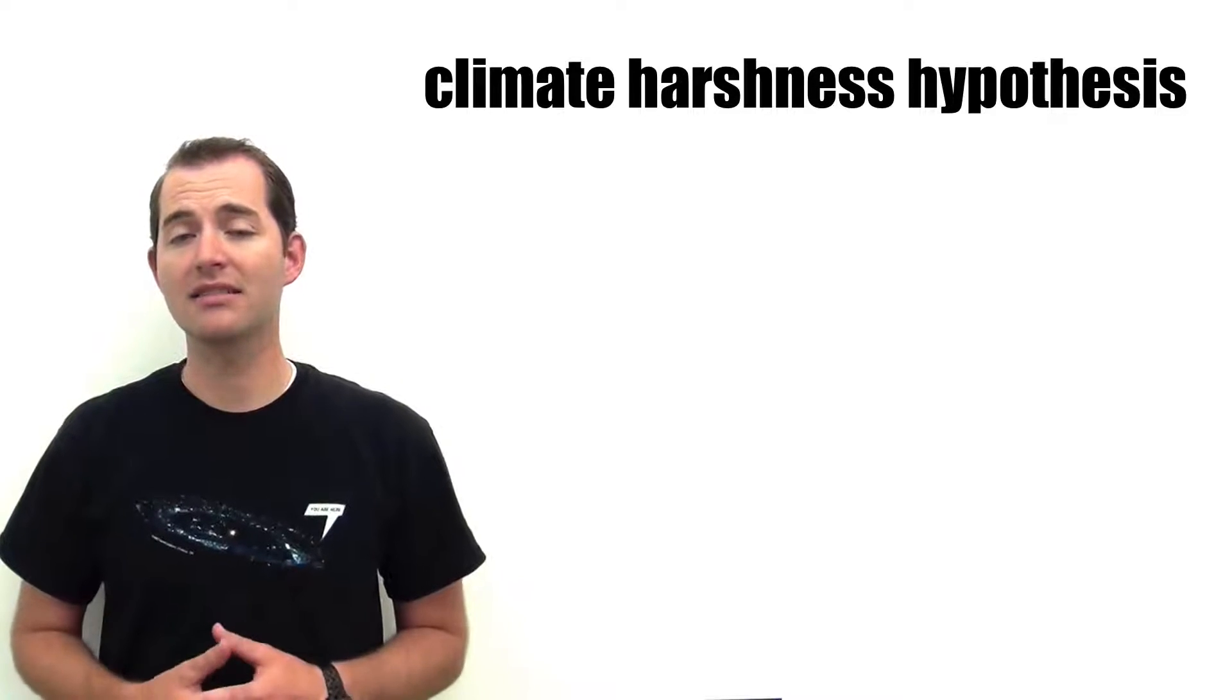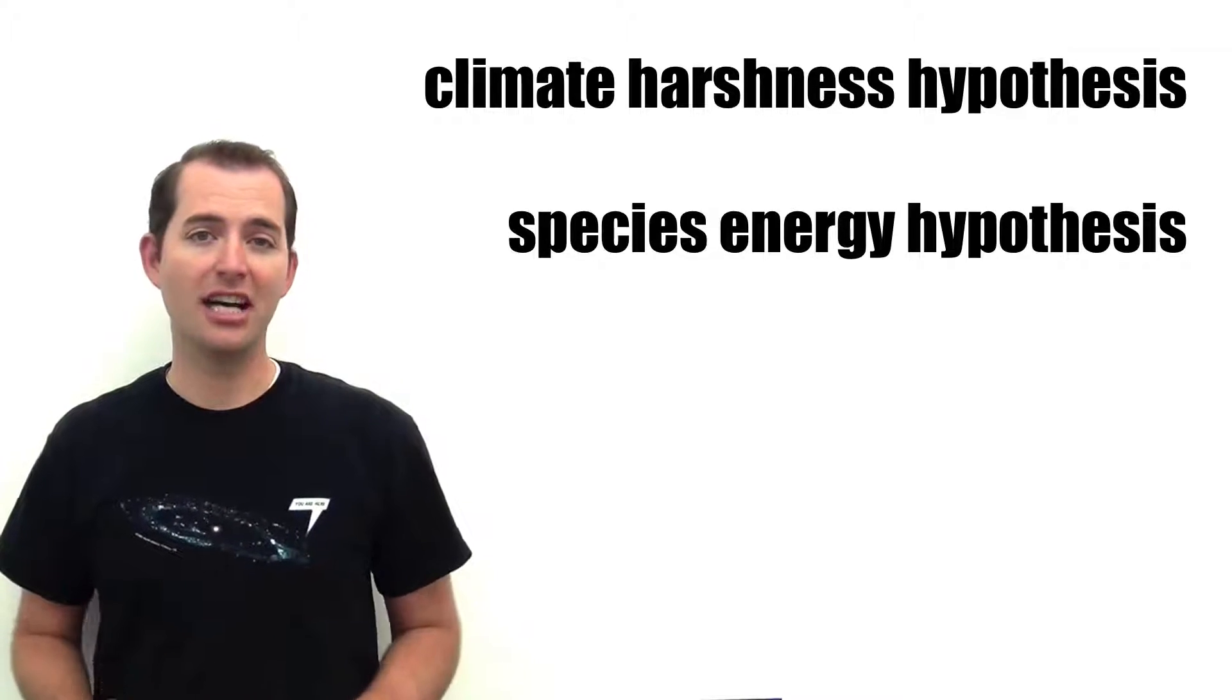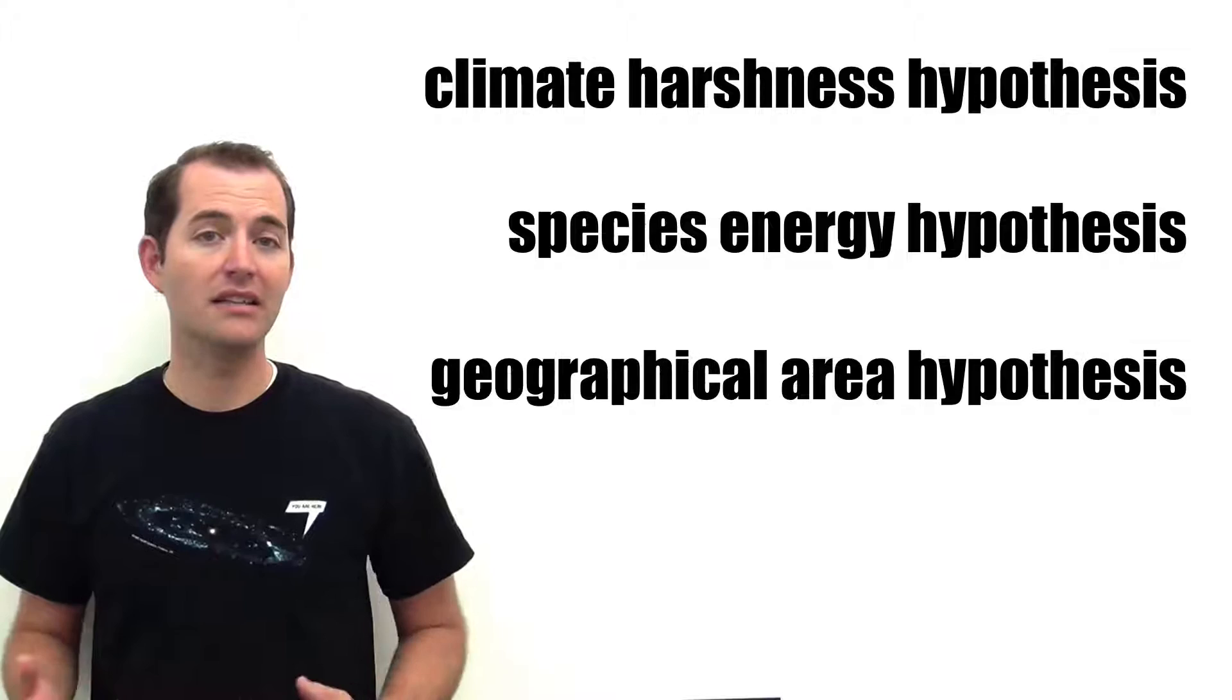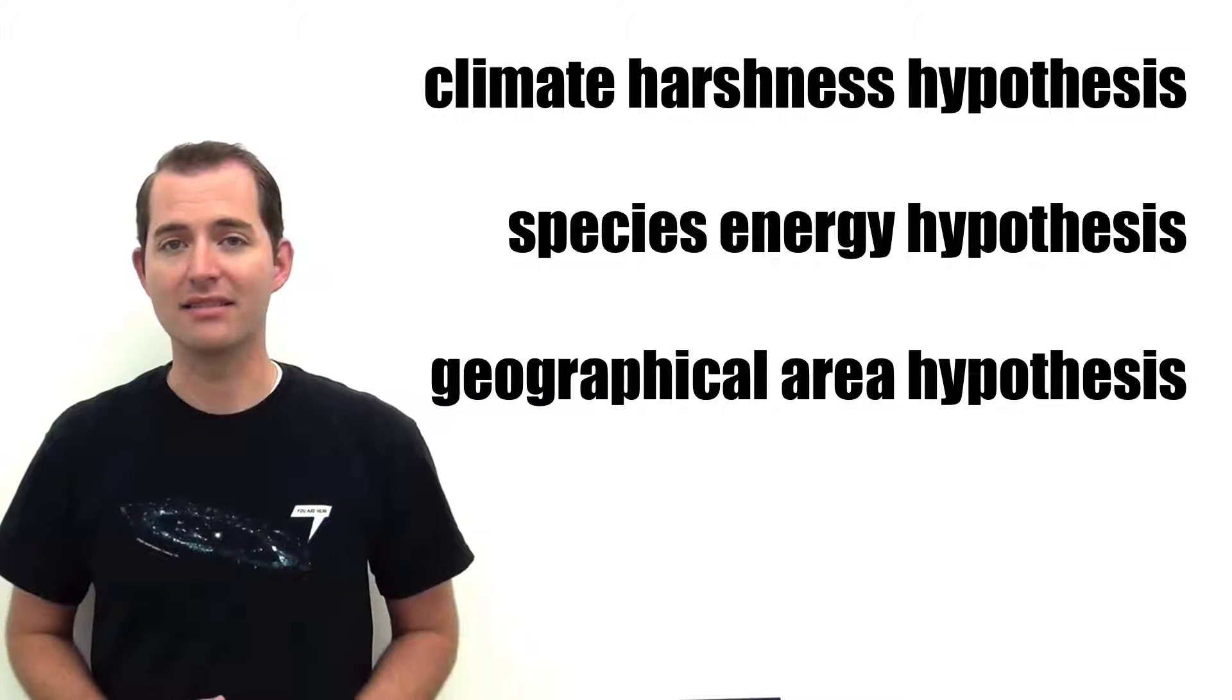There are lots of proposed explanations for why these variations across the Earth happen. Explanations for these patterns in biodiversity include the climate harshness hypothesis, energy hypothesis, and graphical area hypothesis.